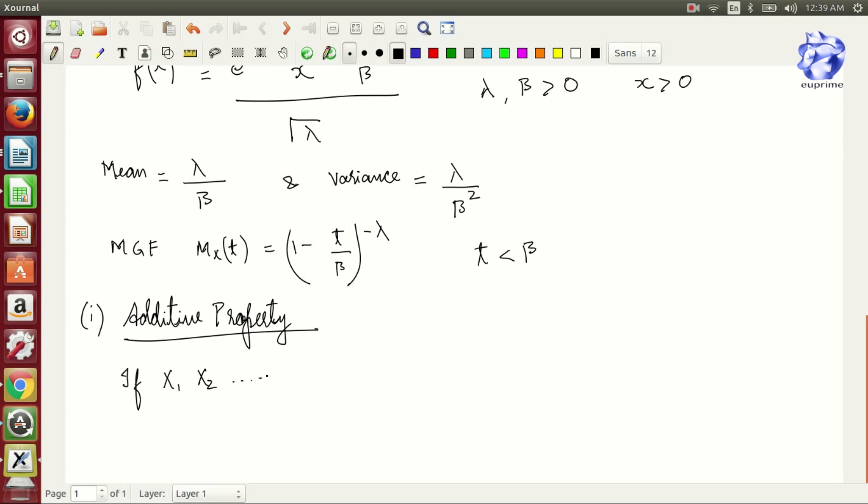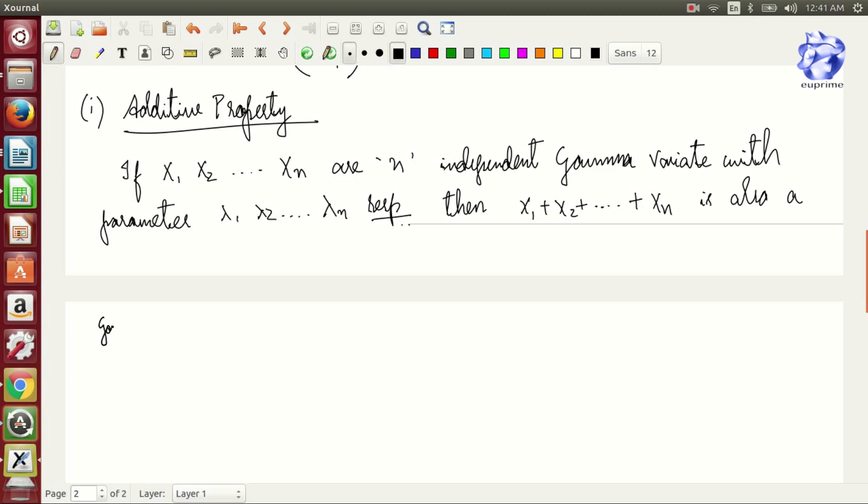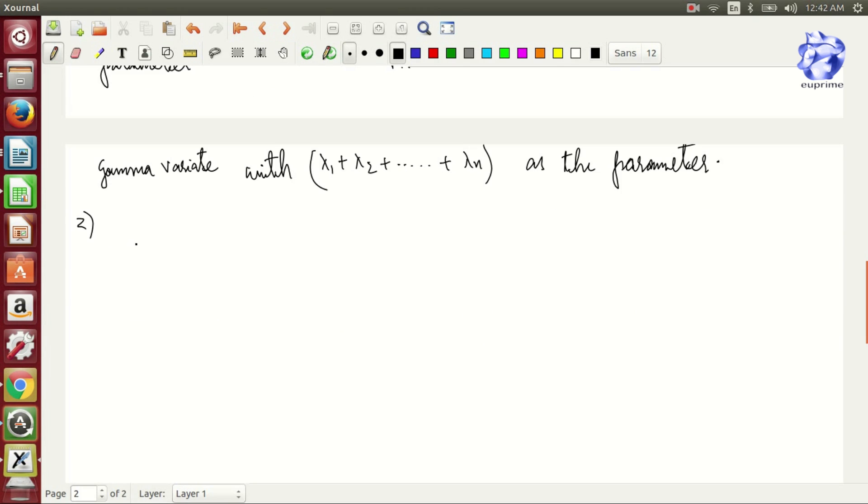First one is the additive property. If X₁, X₂, up to X_n are n independent gamma variates with parameters λ₁, λ₂, up to λ_n, then X₁ plus X₂ plus up to X_n is also a gamma variate with parameter λ₁ plus λ₂ plus up to λ_n.